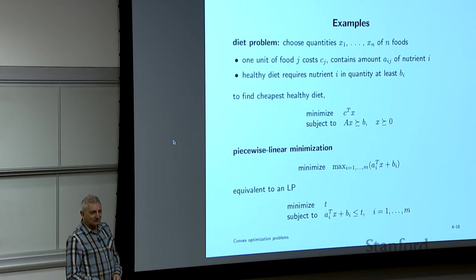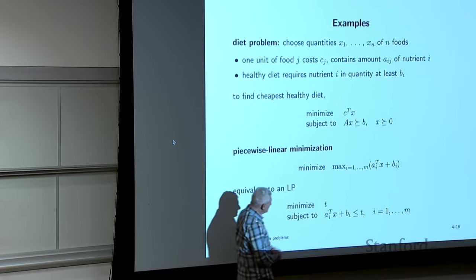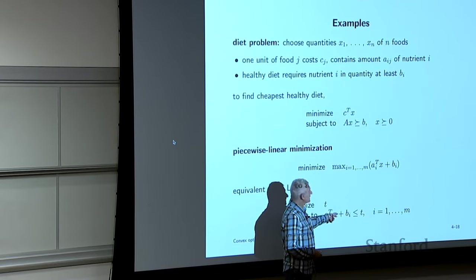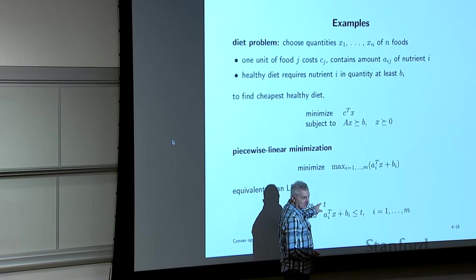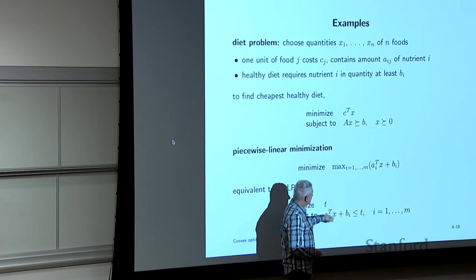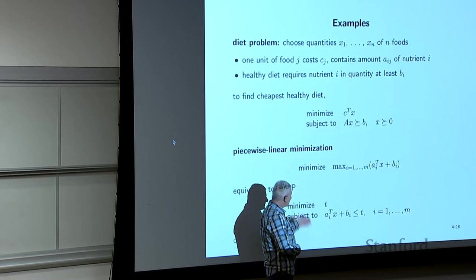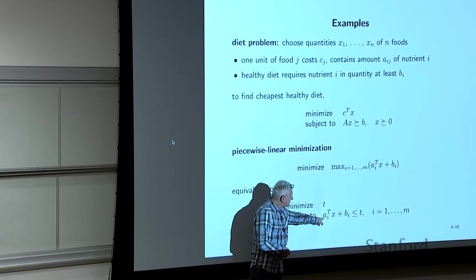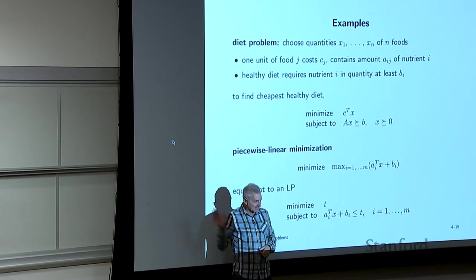But it easily converts to an LP using the epigraph form. Introduce a new variable T: the constraints say that (x, T) is in the epigraph of the function, i.e., T is an upper bound on the max. The resulting problem minimizes T subject to linear constraints — that's an honest LP. These are equivalent, and someone working in this area would expect you to know that.